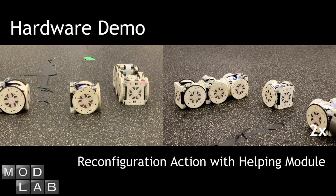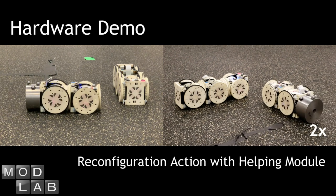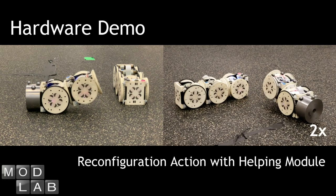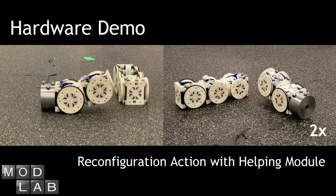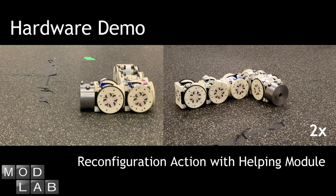Now we will show our hardware demonstration. The first part of the demonstration shows how side-face docking can be accomplished. In order to change the orientation of the left face of the connecting module, a helper module is able to dock to the connecting module and lift it off the ground to properly orient the connecting module's left face. The helper module then moves the connecting module to the robot configuration for docking.